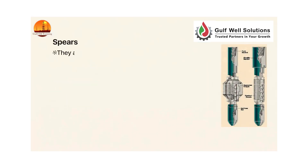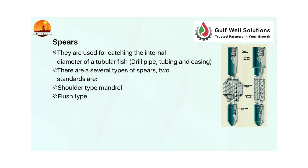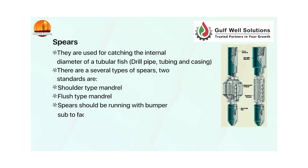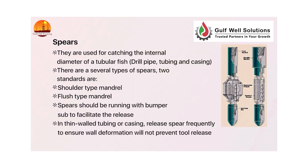Spears: used for catching the internal diameter of a tubular fish — drill pipe, tubing, and casing. There are several types of spears. Two standards are shoulder-type mandrel and flush-type mandrel. Spears should be run with bumper subs to facilitate the release. In thin-walled tubing or casing, release the spear frequently to ensure wall deformation will not prevent tool release.